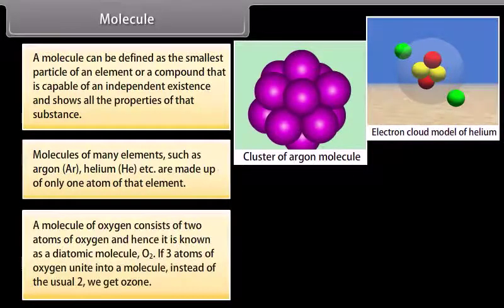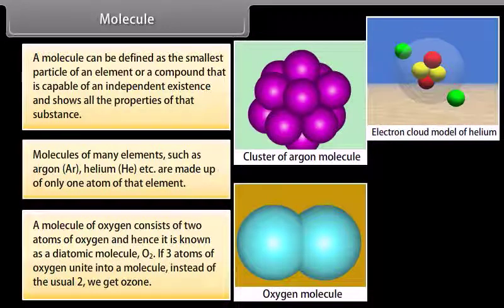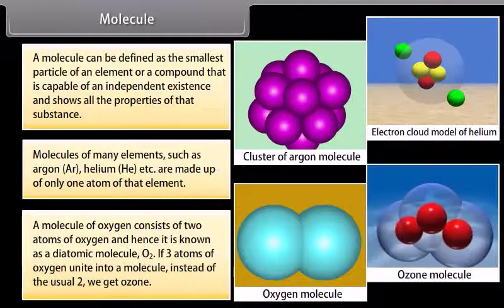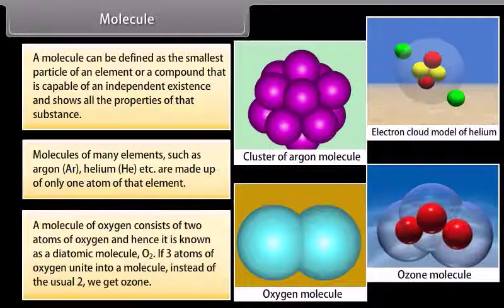A molecule of oxygen consists of two atoms of oxygen and hence it is known as a diatomic molecule, O2. If three atoms of oxygen unite into a molecule instead of the usual two, we get ozone.